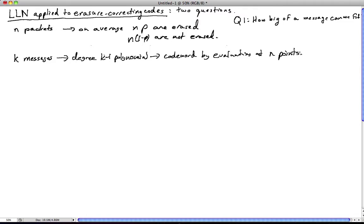Now, suppose we have a probabilistic model of the erasure process. Namely, we believe that on average, if we transmit these n packets, on average np of them are erased and n times 1 minus p are not erased. Now, this is the behavior on average.